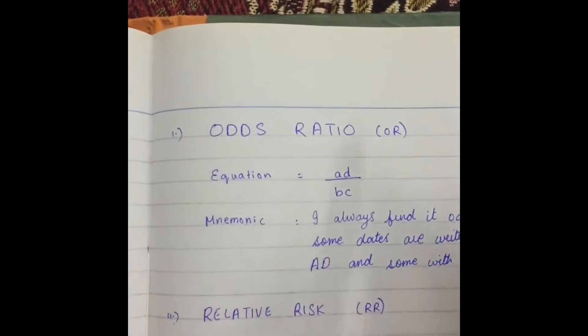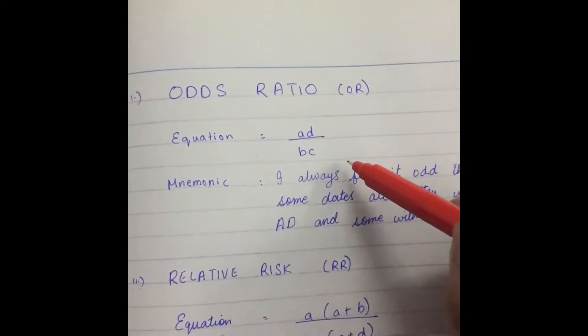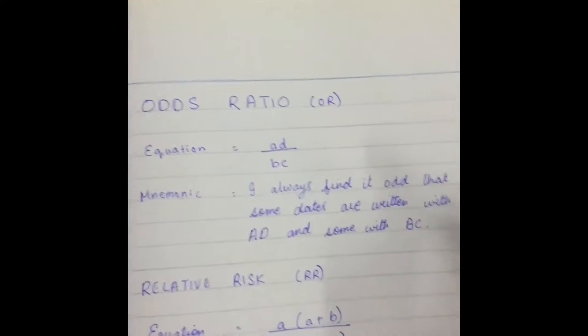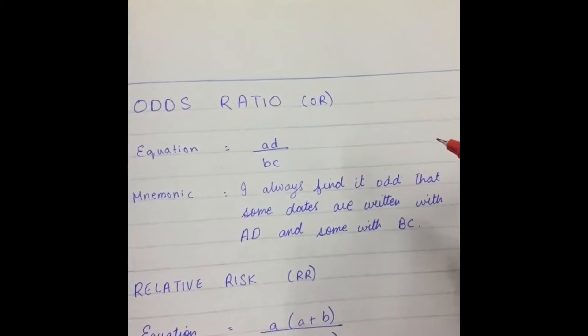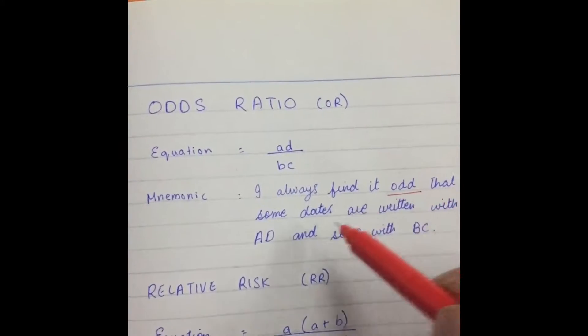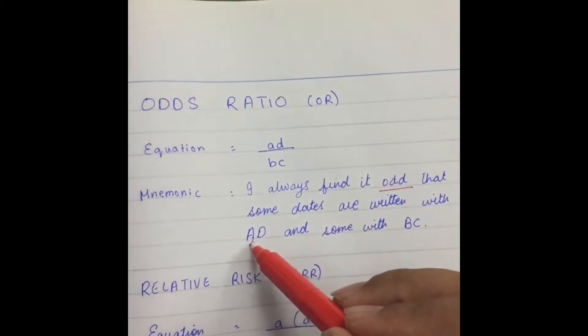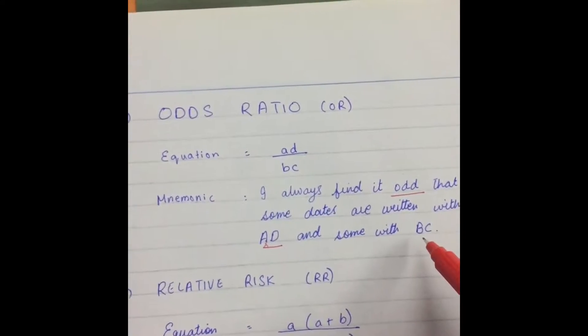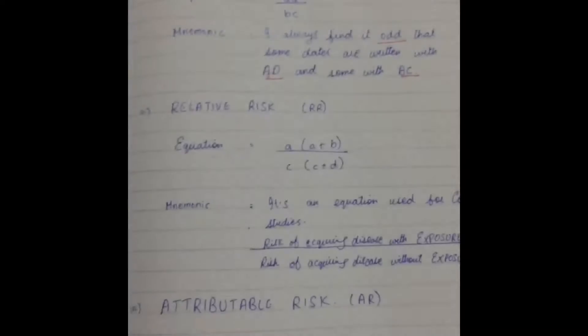Odds Ratio. Its equation is AD by BC. And mnemonic is, I always find it odd that some dates are written with AD and some are with BC.